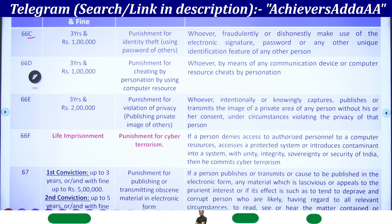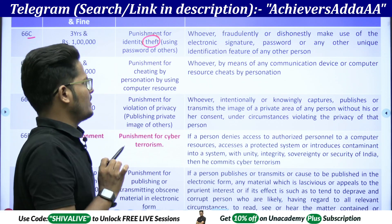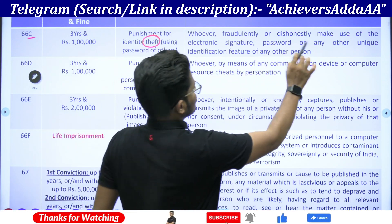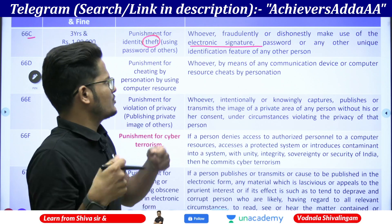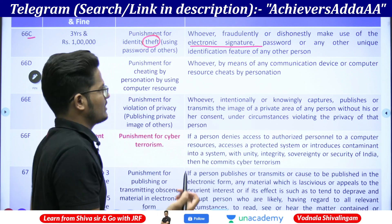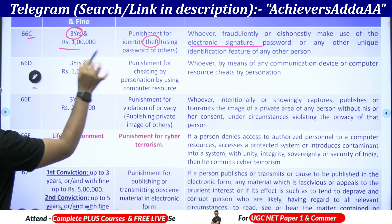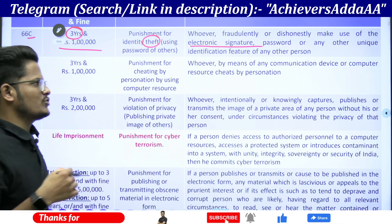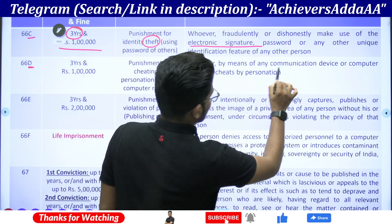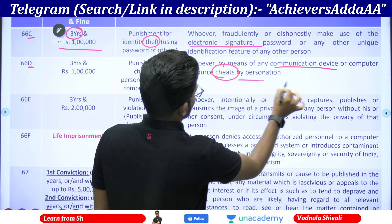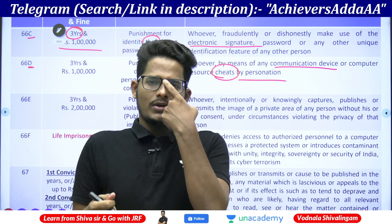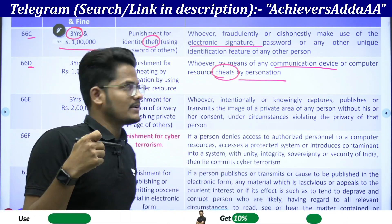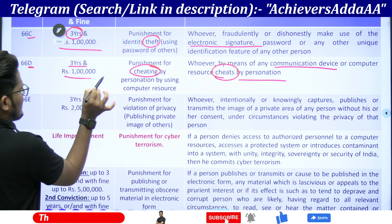Section 66C will be punishment for identity theft — using credentials of someone, hacking credentials, using a password of others. Whoever fraudulently or dishonestly makes use of electronic signatures, passwords, OTPs, unique identification numbers, anything you are trying to use dishonestly without the knowledge of other person — three years will be the imprisonment and one lakh will be the penalty. Section 66D is cheating by personation — you are trying to cheat other person by means of any communication device or computer resource. You are trying to cheat someone by using social media, misrepresenting yourself. As per that, three years and one lakh will be the penalty.